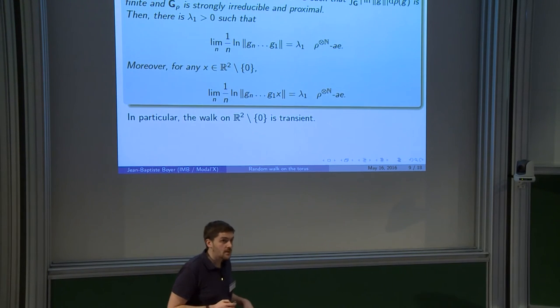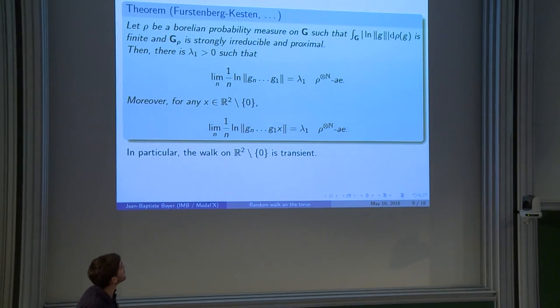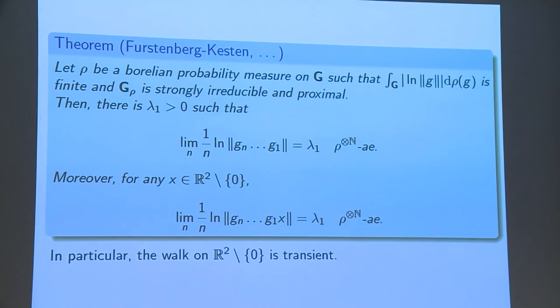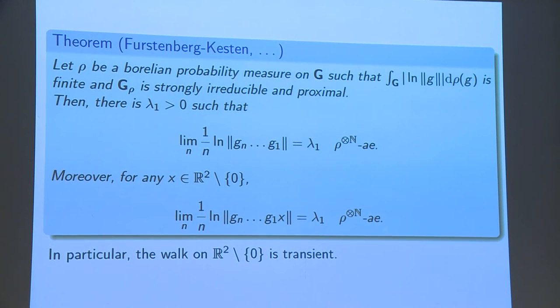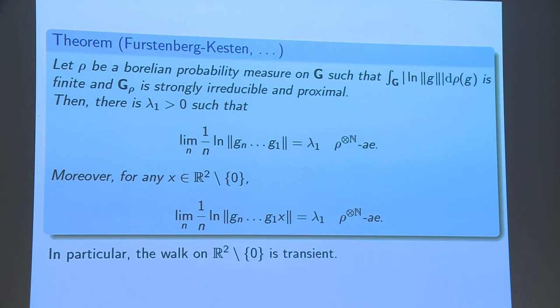And the first theorem I have is a result by Furstenberg and Kesten, who say that if I take these assumptions on the support of ρ and I make a moment assumption, so I want the logarithm of the norm to be integrable. And this is really a moment one assumption, like in the law of large numbers. As I said, the norm is sub-multiplicative, so the logarithm of the norm is sub-additive.